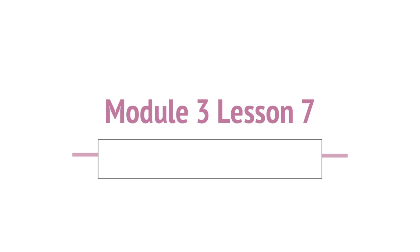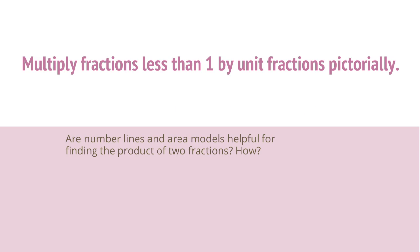Hello 5th graders. Today we are in grade 5 module 3, and we're going to be going over lesson 7. Our objective for today's lesson is to multiply fractions less than 1 by unit fractions pictorially. One of the key questions we have for today's lesson is: are number lines and area models helpful for finding the product of two fractions, and how?